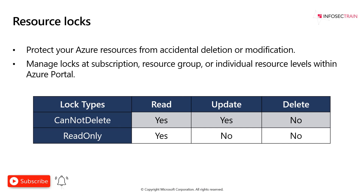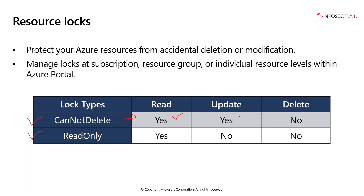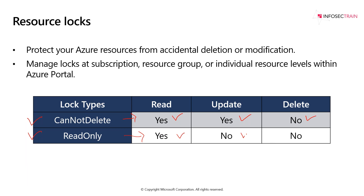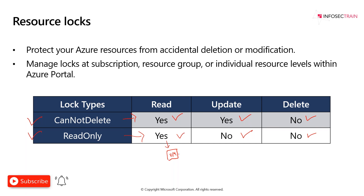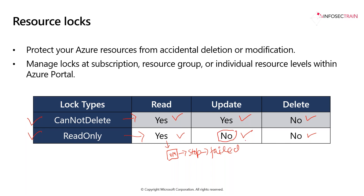Then we have resource locks. If someone is accidentally deleting a resource and you don't want that, you can use locks. There are two types: Cannot Delete and Read Only. With Cannot Delete, a person can read and update the resource but cannot delete it. With Read Only, you can read it but cannot update or delete it. For example, if I have a VM with a Read Only lock, I can see it is running and read all its stats, but if I try to stop it, the activity will fail because I don't have permission to update it — and I cannot delete it either.